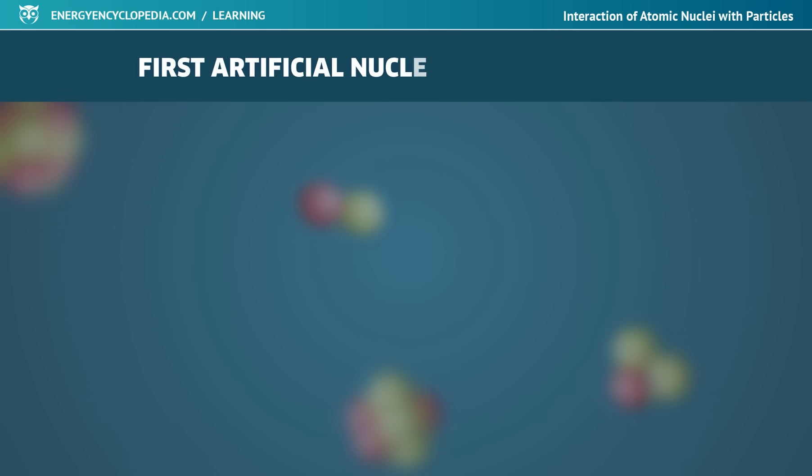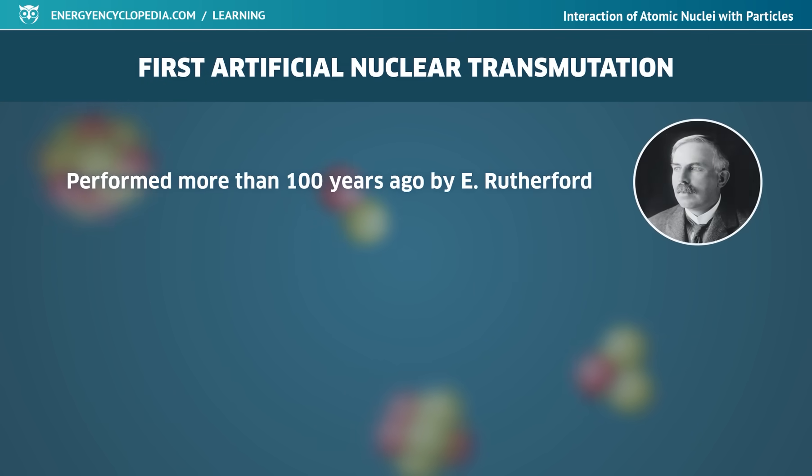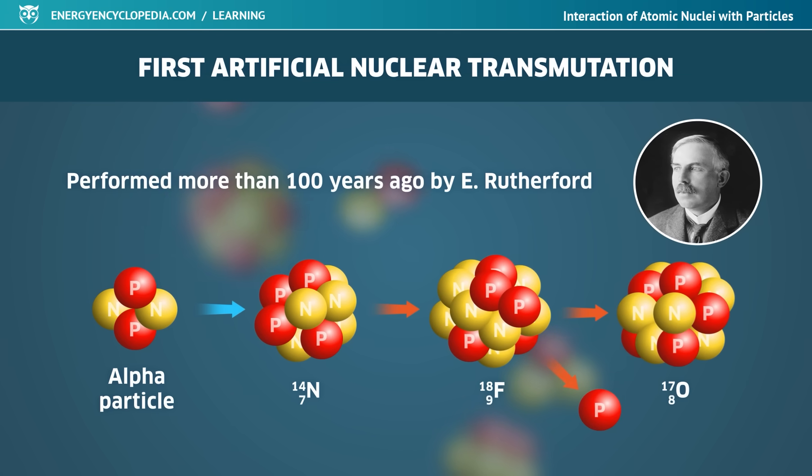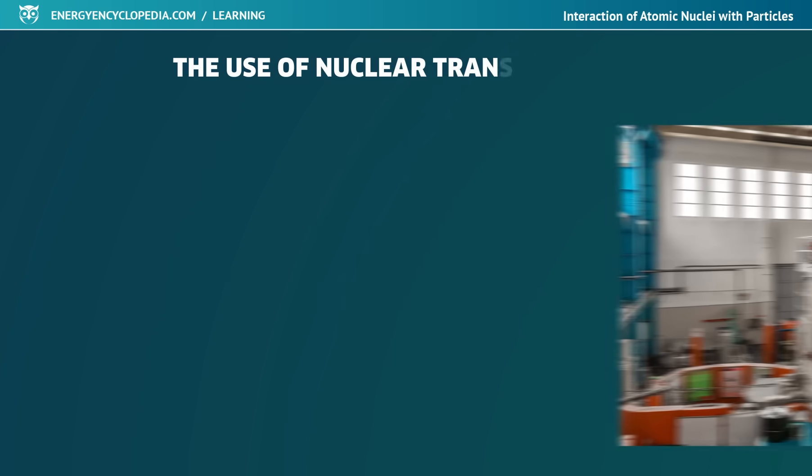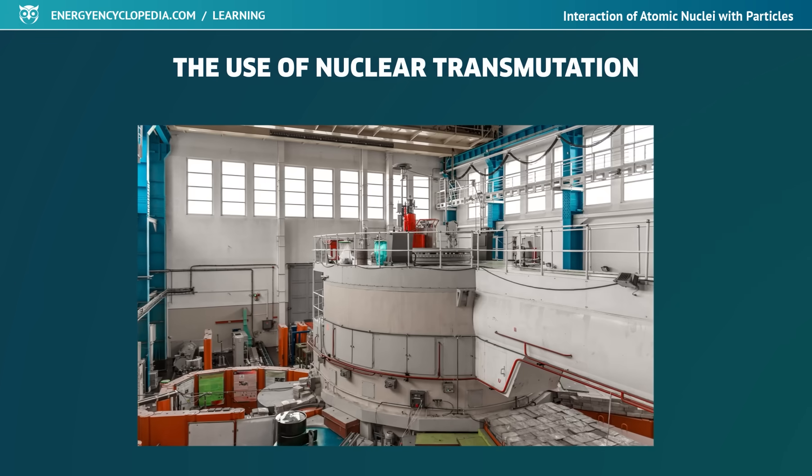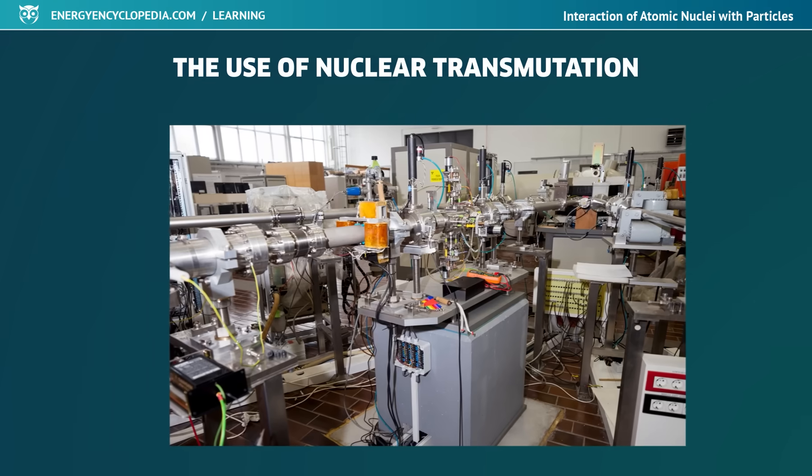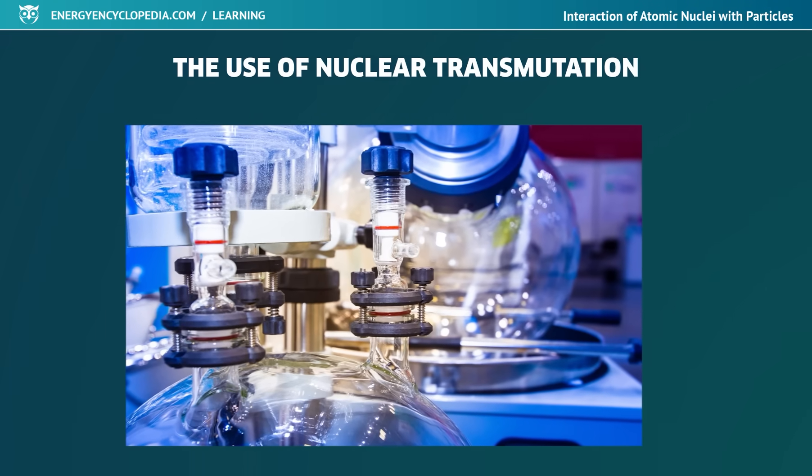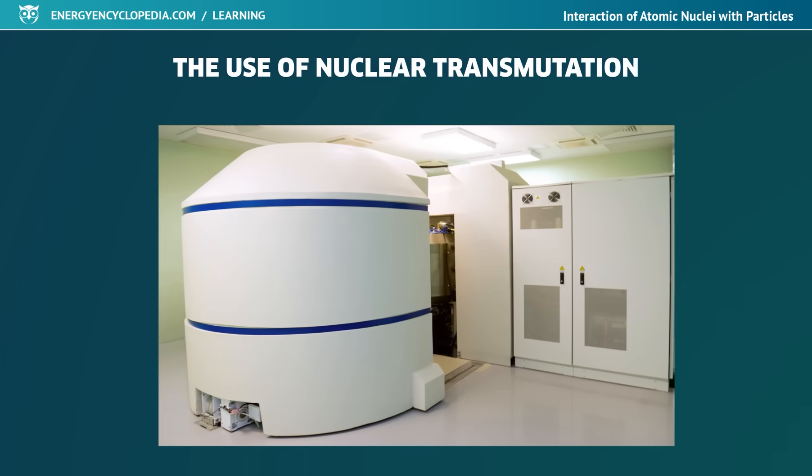The first artificial nuclear transmutation was performed more than 100 years ago by Ernest Rutherford when he bombarded an isotope of nitrogen with alpha particles. The result of the given reaction was an isotope of oxygen and an emitted proton. Today, nuclear transmutations are commonly used primarily to produce artificial radionuclides for the needs of contemporary science, research and technology, and for use in healthcare and a number of industrial fields.